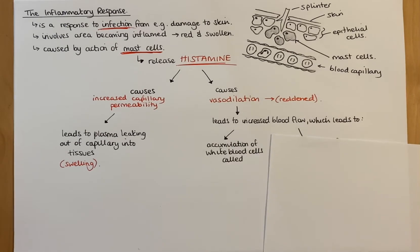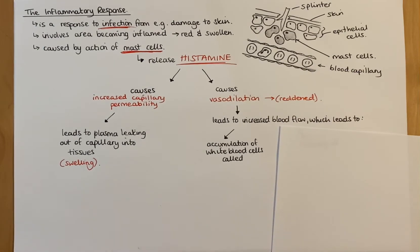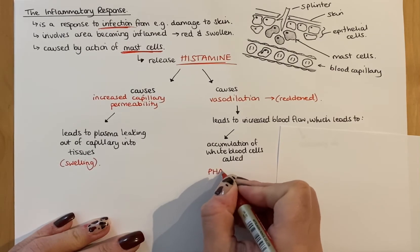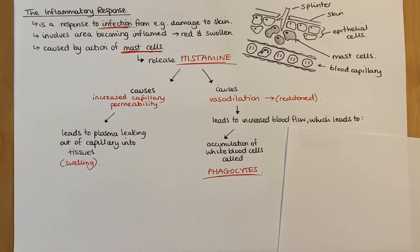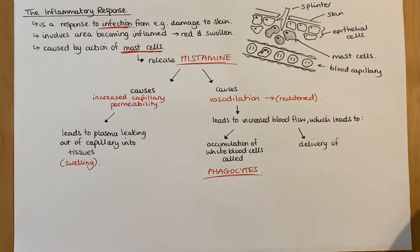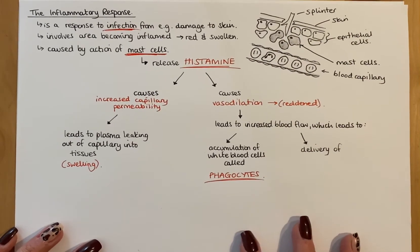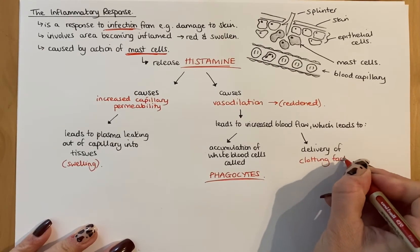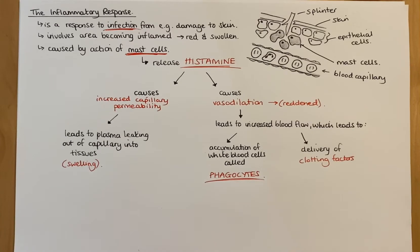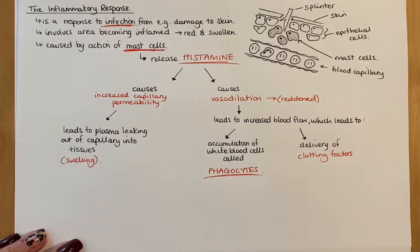That increased blood flow is a good thing because it brings in white blood cells to deal with the infection. Specifically, it brings in a particular type of white blood cell called phagocytes, which engulf and digest pathogens. Increased blood flow also delivers things needed to seal the wound. Thinking back to Unit 2, to seal and protect a wound you need clotting factors - so it delivers clotting factors to seal off the area and prevent any further infection coming in.